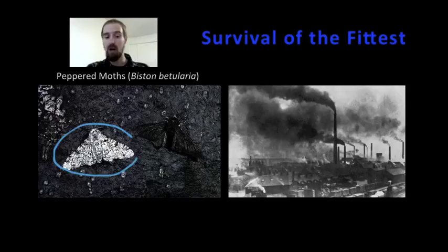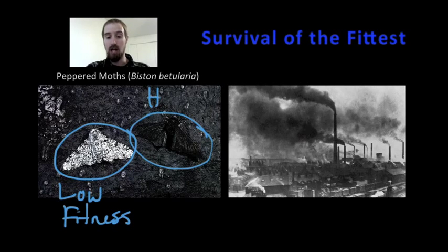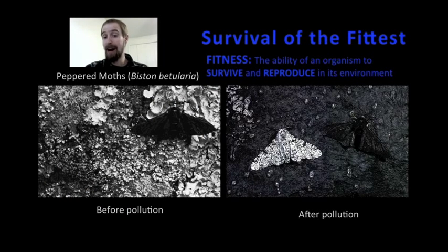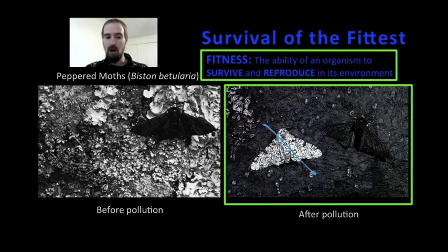Suddenly, the white moths — the Typica variety — were no longer camouflaged against the bark of the tree, while the opposite was true for the black moths, the Carbonarias. The tables had turned, and now birds looking for moths to eat were able to easily spot the white moths against the soot-stained bark, while the black moths blended in and were nearly invisible to predators. So while the white moths were the fittest prior to the Industrial Revolution, the change in the environment caused a change in fitness among the individual peppered moths. Against a soot-covered tree, black moths have the highest fitness because they are most likely to survive and reproduce, while white moths would be less fit.